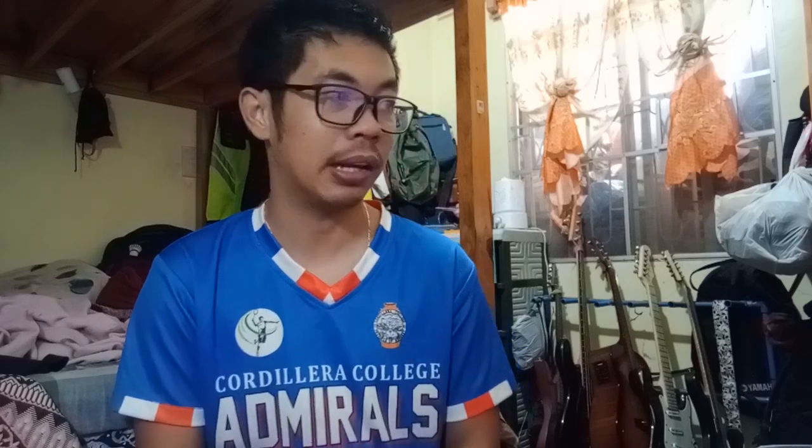The second type is chemical digestion. It involves different chemicals or substances like your acids and enzymes. In your handouts, you get to see the word gastrin. It triggers the stomach to produce what you call pepsinogen, mucus, and hydrochloric acid. These are some of the enzymes and acids found in your stomach. Did you know that your hydrochloric acid is as strong as muriatic acid?